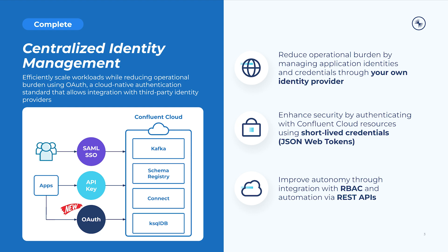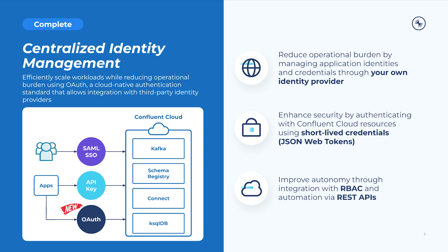OAuth is a secure, industry-standard, cloud-native authentication protocol that allows an application access to resources hosted by another service provider on behalf of a user. For example, this could be an application looking to access resources hosted by Confluent Cloud. With OAuth support for Confluent Cloud, customers are now able to bring their own third-party identity provider, such as Okta, Azure IDP, or an on-prem provider, to manage application identities and credentials.